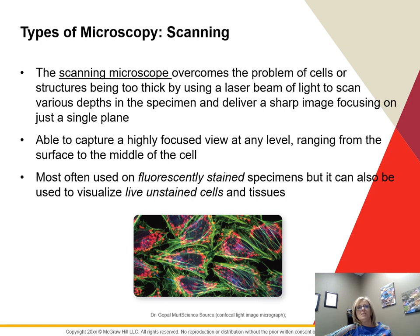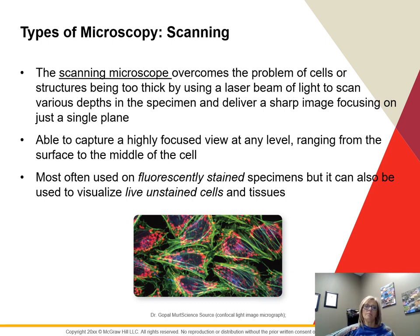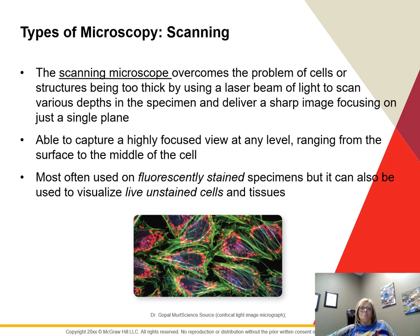Confocal scanning microscopes help us visualize particular structures in a cell that are too thin to see otherwise. A laser beam scans different depths of the specimen, giving a very sharp image in a single plane. This is often used with fluorescent stain, but can also be used to visualize live cells that are not stained and some tissues.